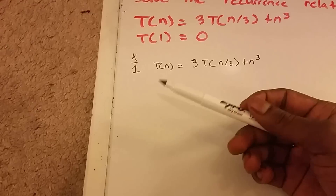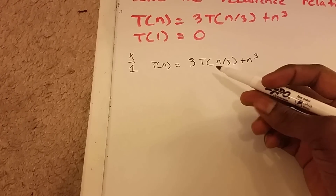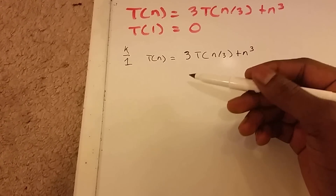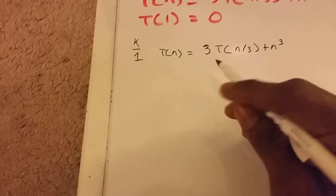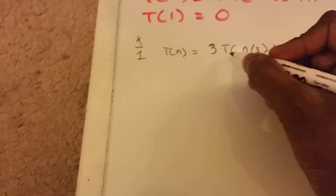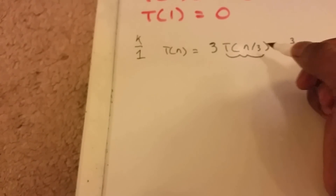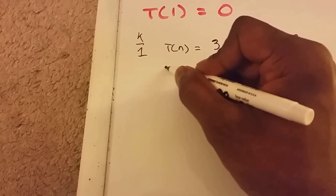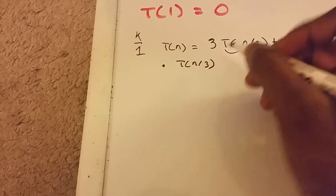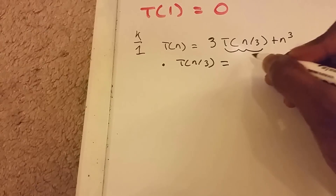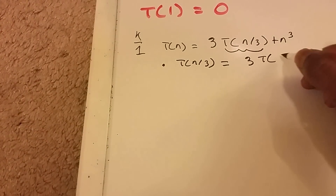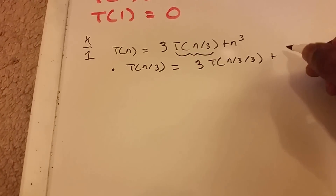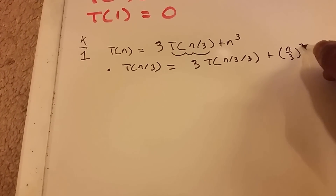Now, usually I don't like to write with this marker, but I believe I will run out of board space if I don't use such a small marker. Now what we need to do is figure out what T of n divided by 3 is. T of n divided by 3 is going to equal 3 times T of n divided by 3, divided by 3, plus n divided by 3, cubed.